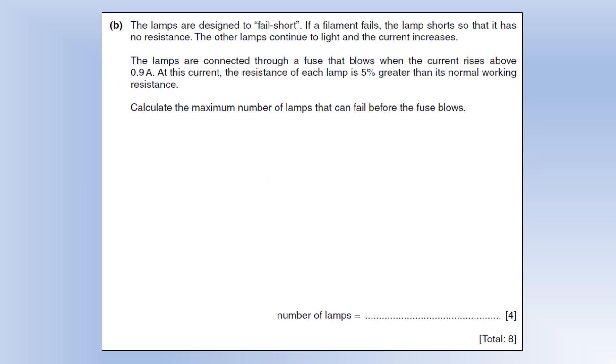The lamps are designed to fail short, and what that means is when they fail they just become a short circuit or zero resistance. If that happens, the total resistance in the circuit is going to decrease, so that's why the current is going to increase.